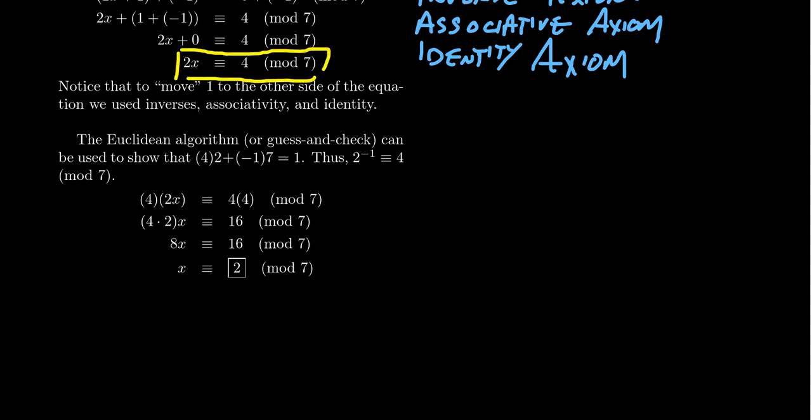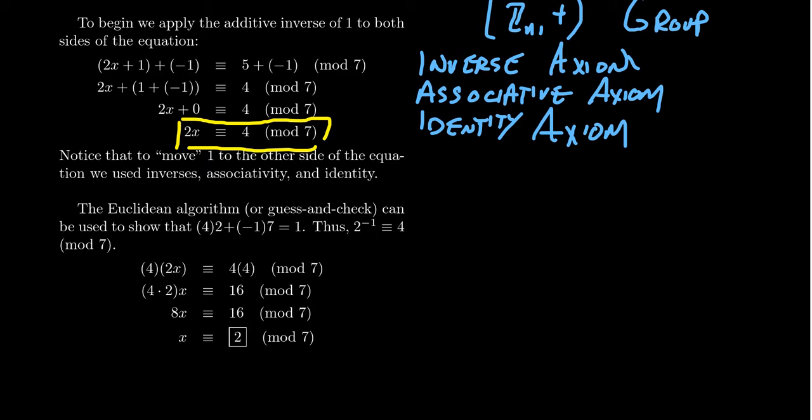Well, now it's tempting to say something like, we need to move the 2 to the other side. How does one do that? Well, it turns out we're going to do the exact same thing. Like we did previously, we're going to use the inverse axiom. And so we're going to apply the inverse of 2 to both sides of the equation. Well, what is the inverse of 2?